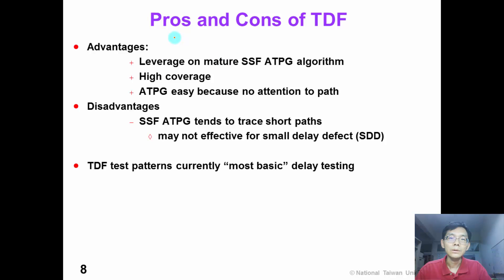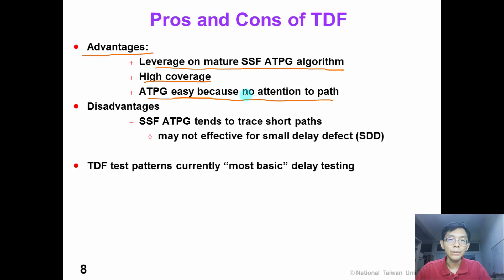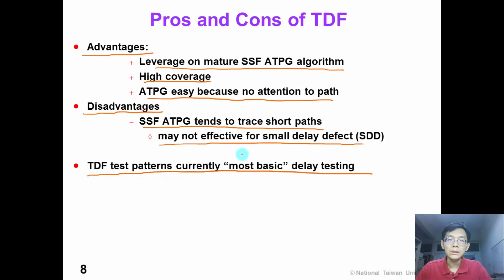In summary, the pros and cons of transition delay fault can be summarized as follows. Transition delay fault can leverage mature single stuck-at fault ATPG. So it is very efficient and the fault coverage can be very high. ATPG is very easy because the test generator does not have to pay attention to the propagation path. However, because single stuck-at fault ATPG tends to trace short paths, the test patterns generated may not be effective for small delay defects.